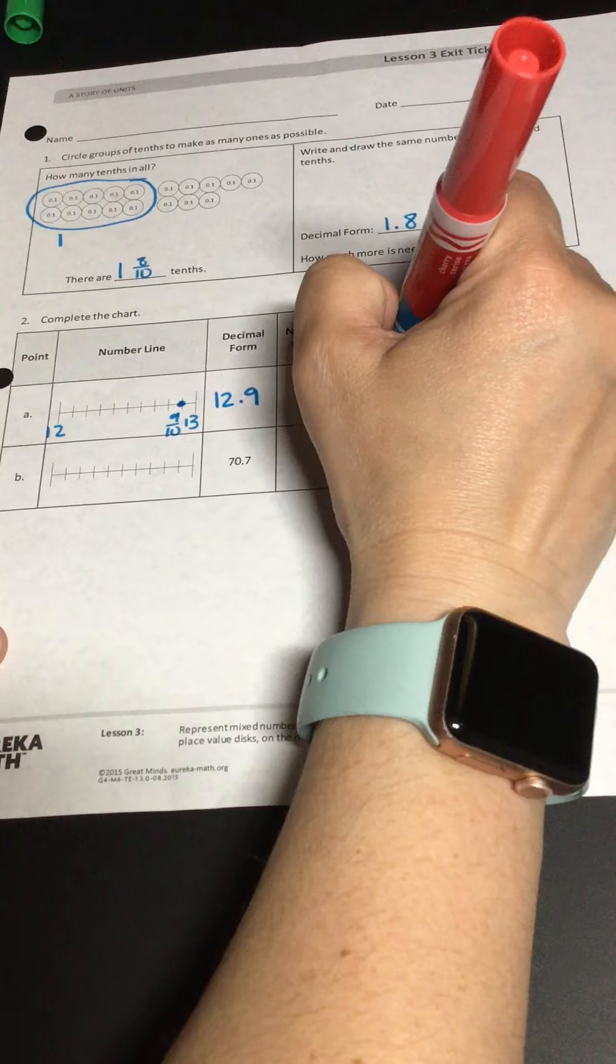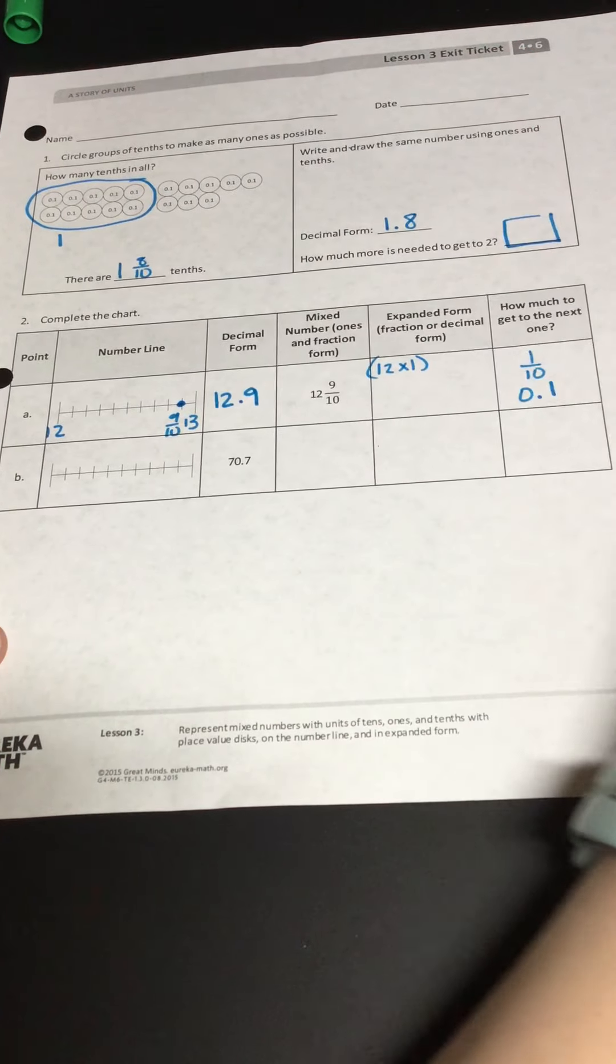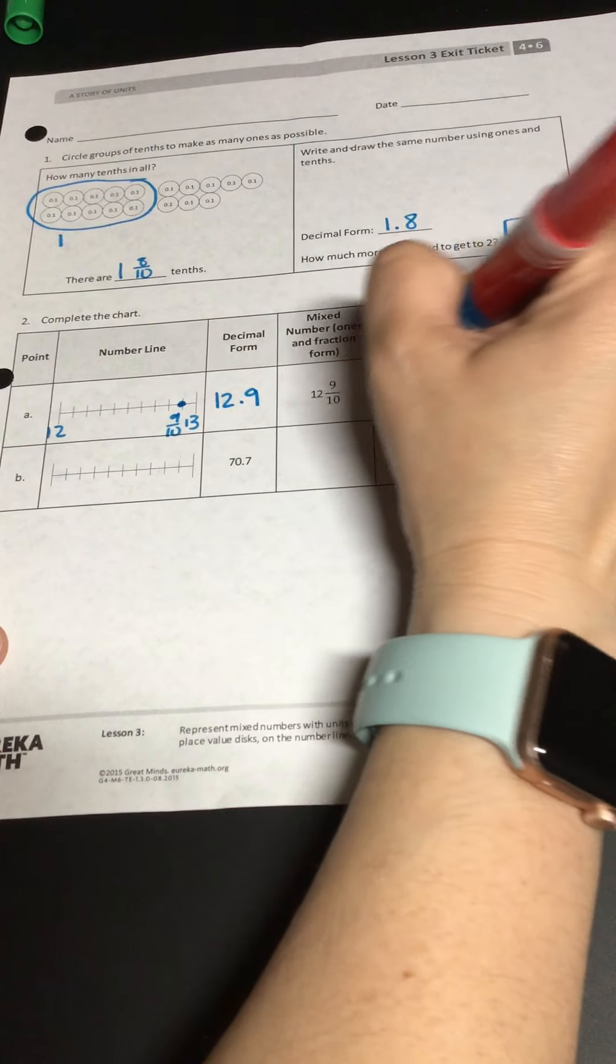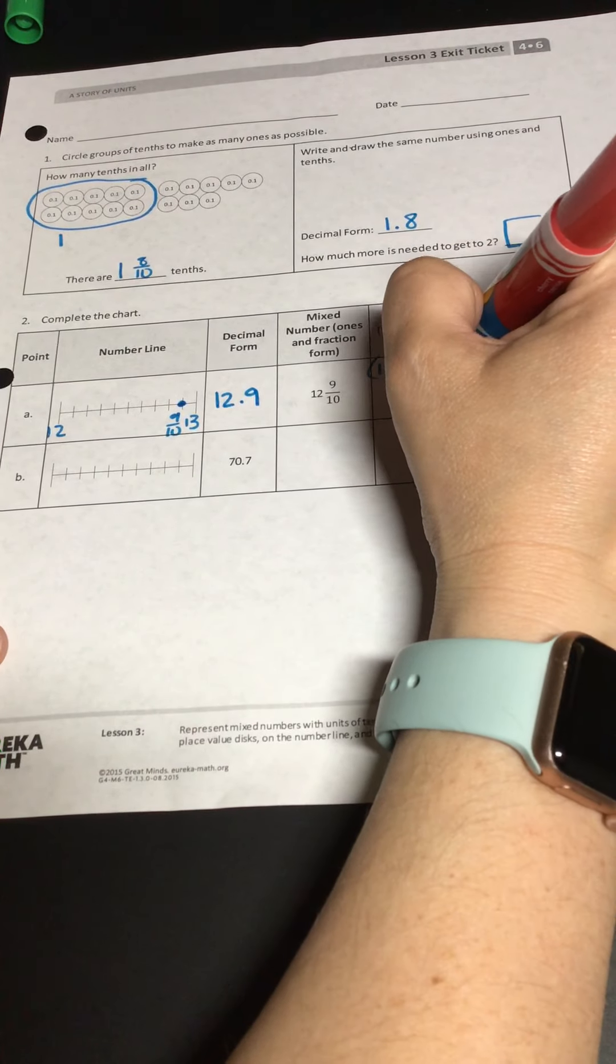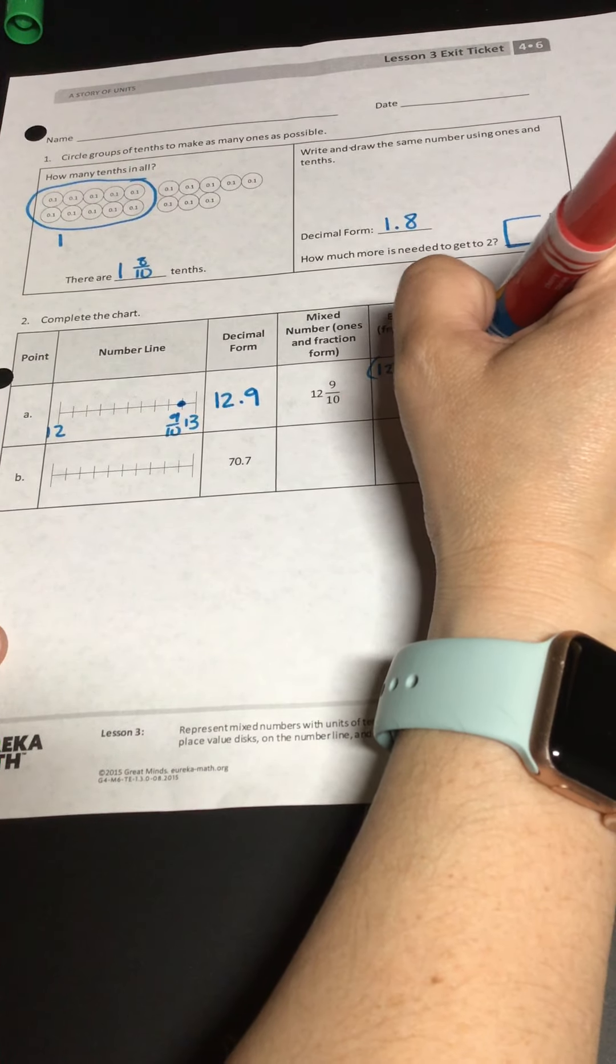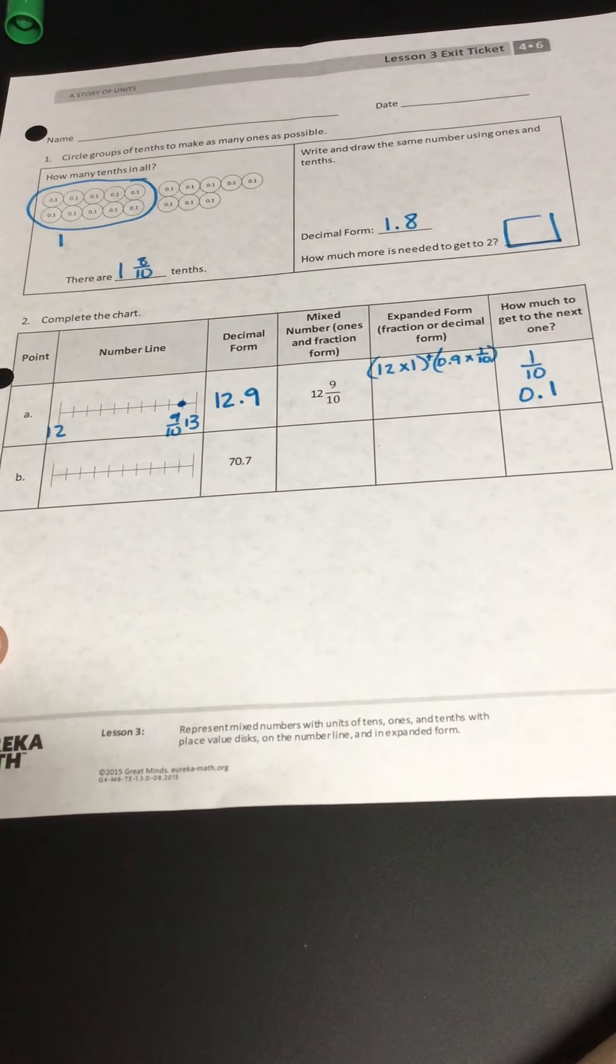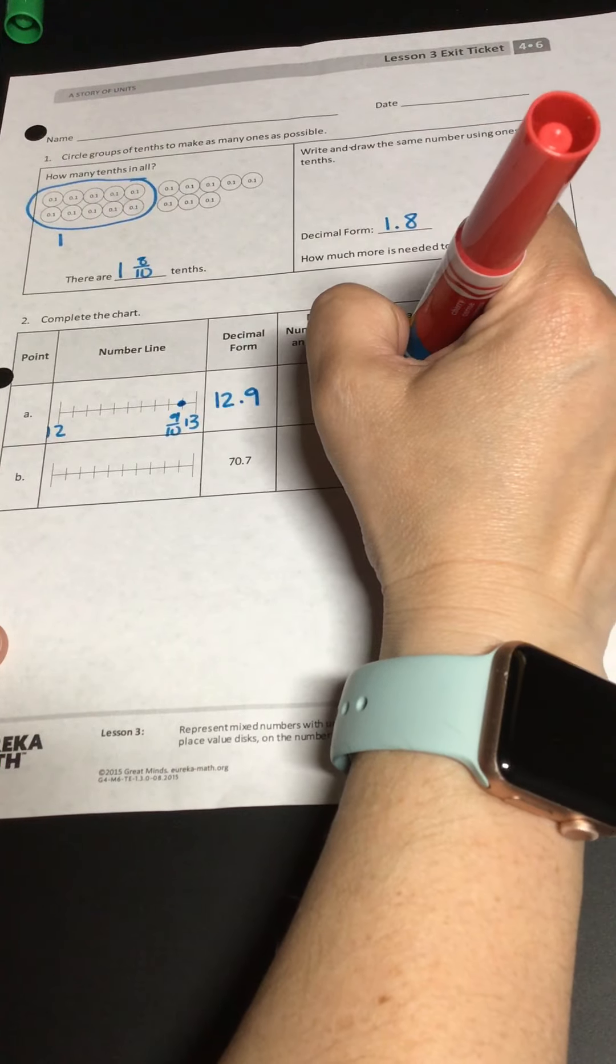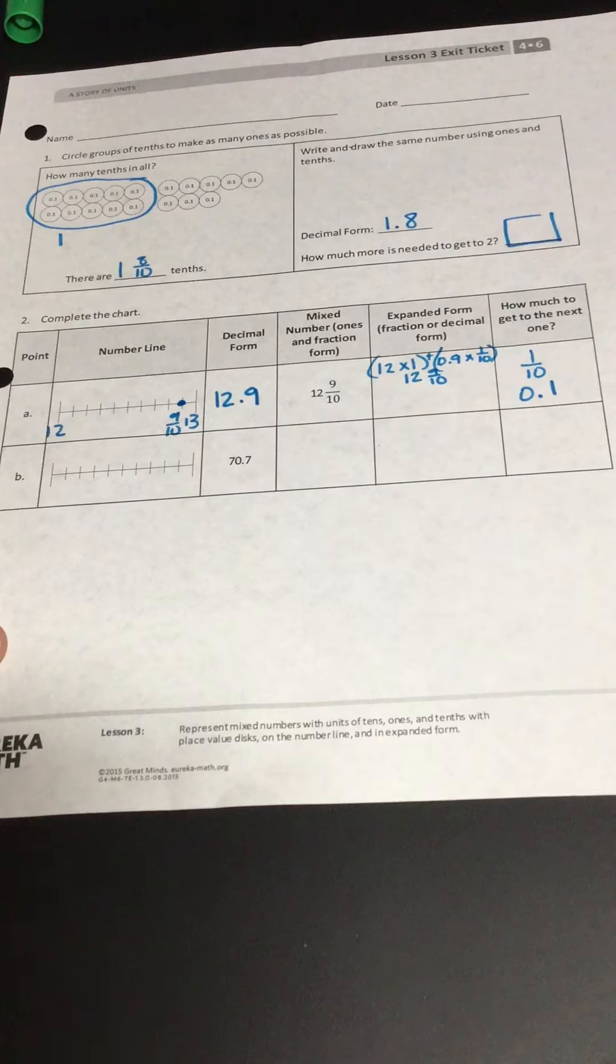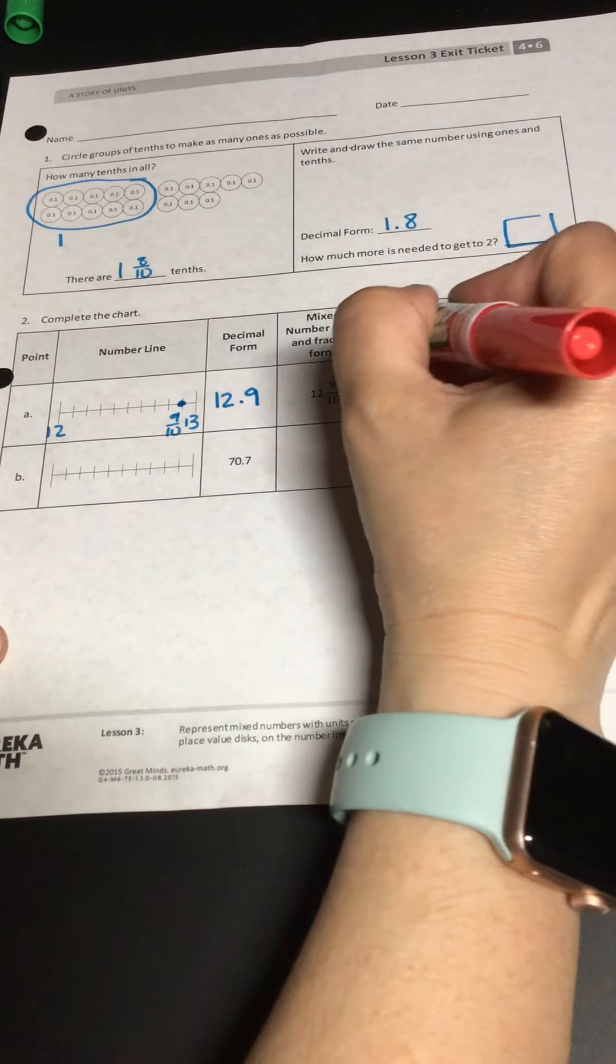And then you want to do expanded form. So I know that I'm going to do 12 times one. And then I'm going to do 0.9. Don't forget your plus sign in there. 0.9 times one tenth. Which would give you 12 and nine tenths.